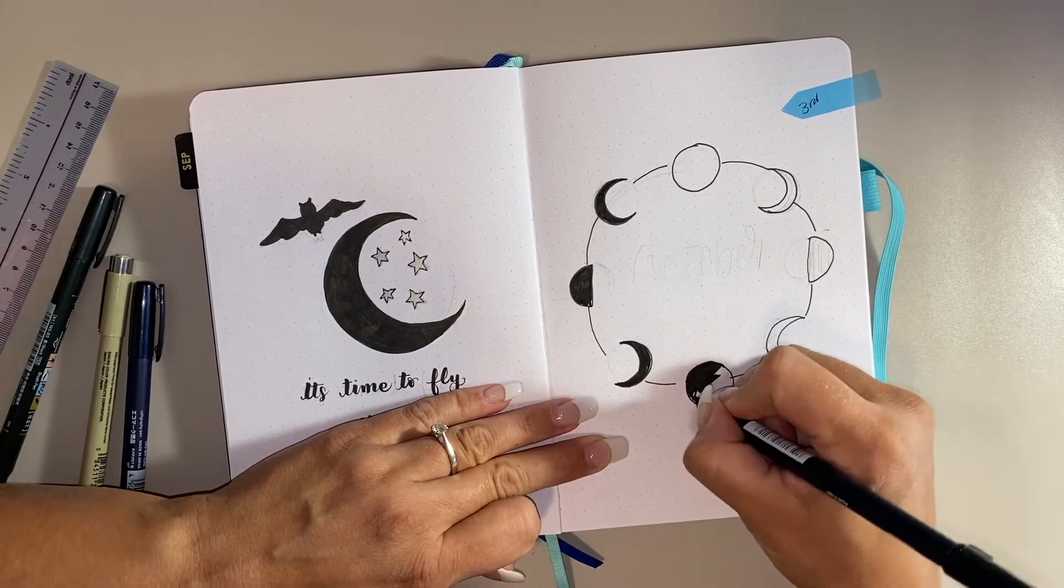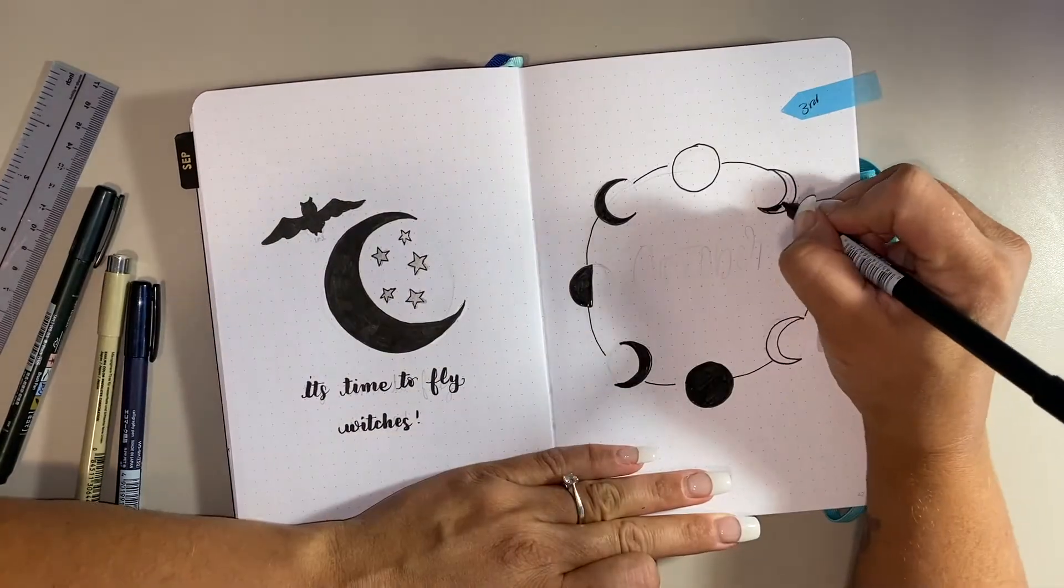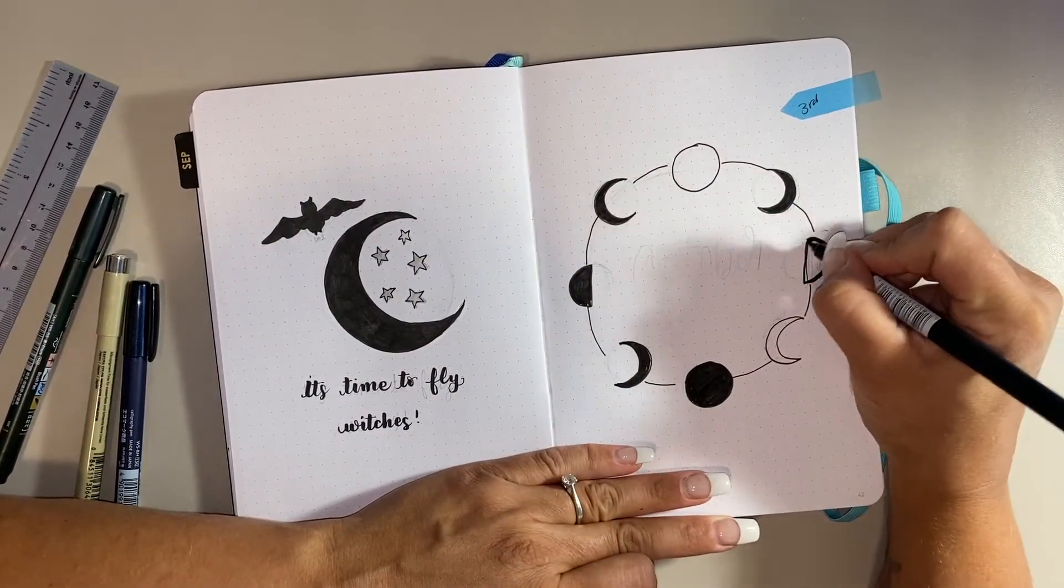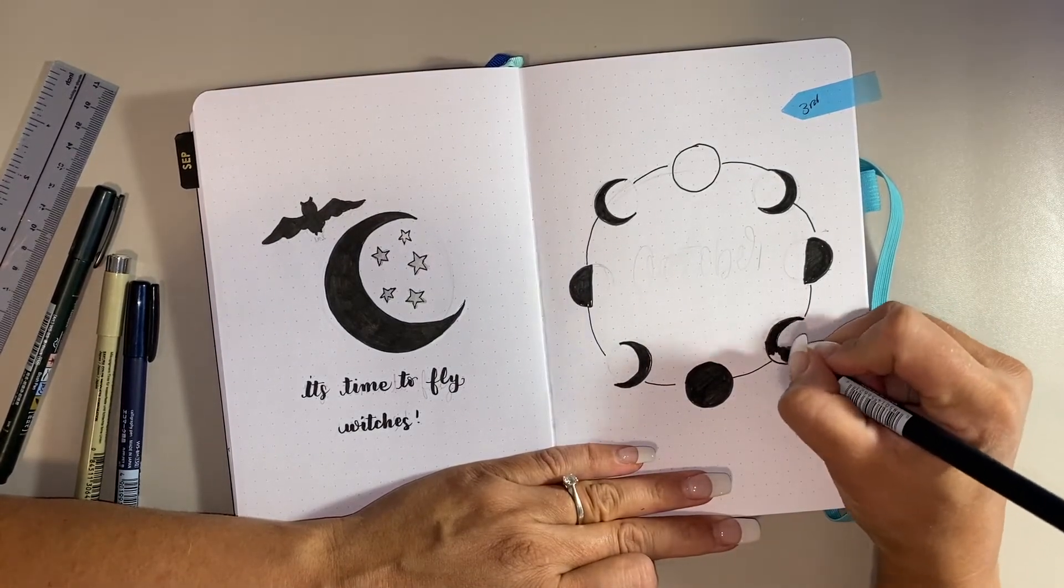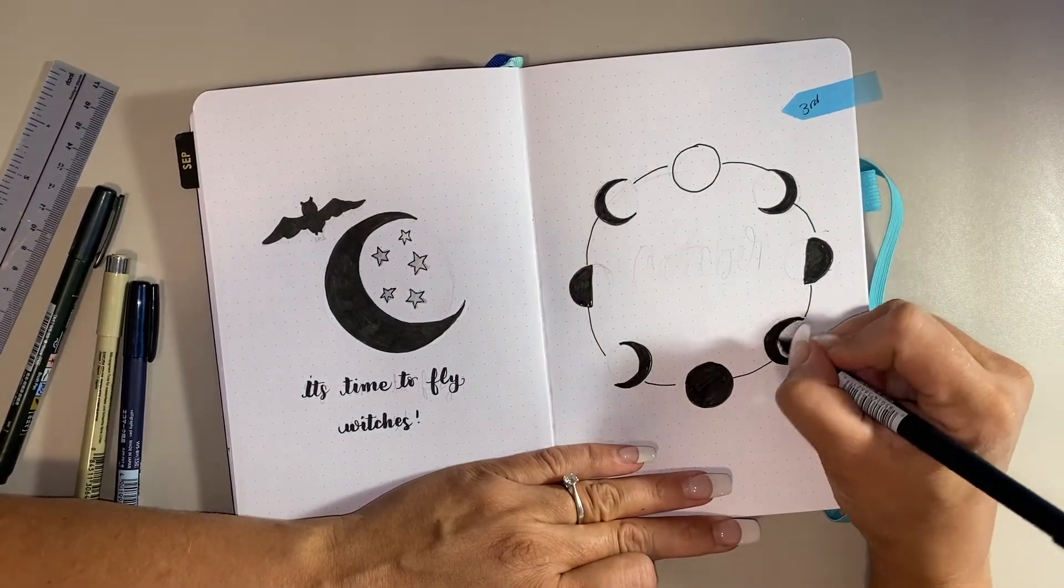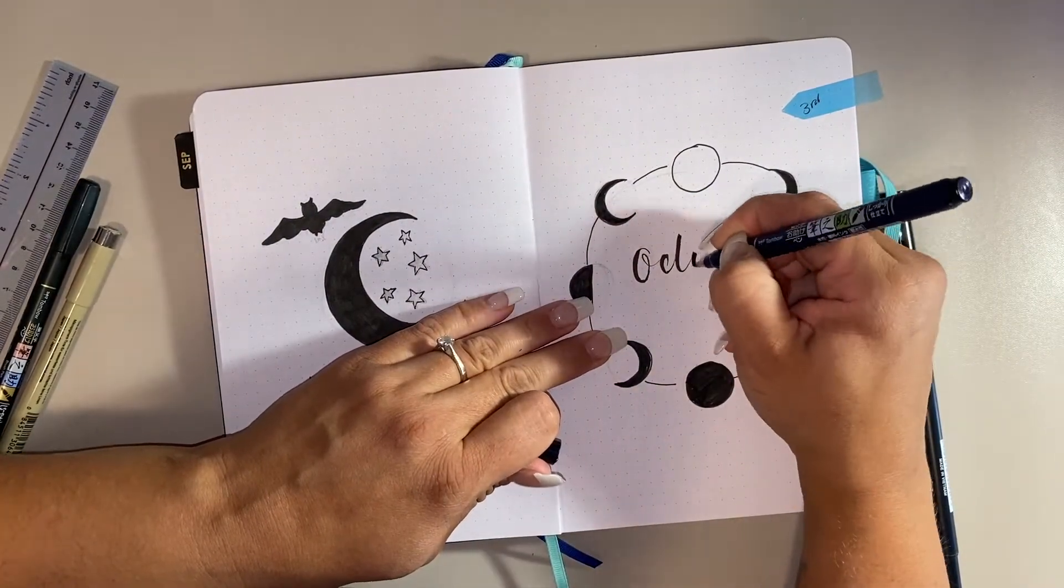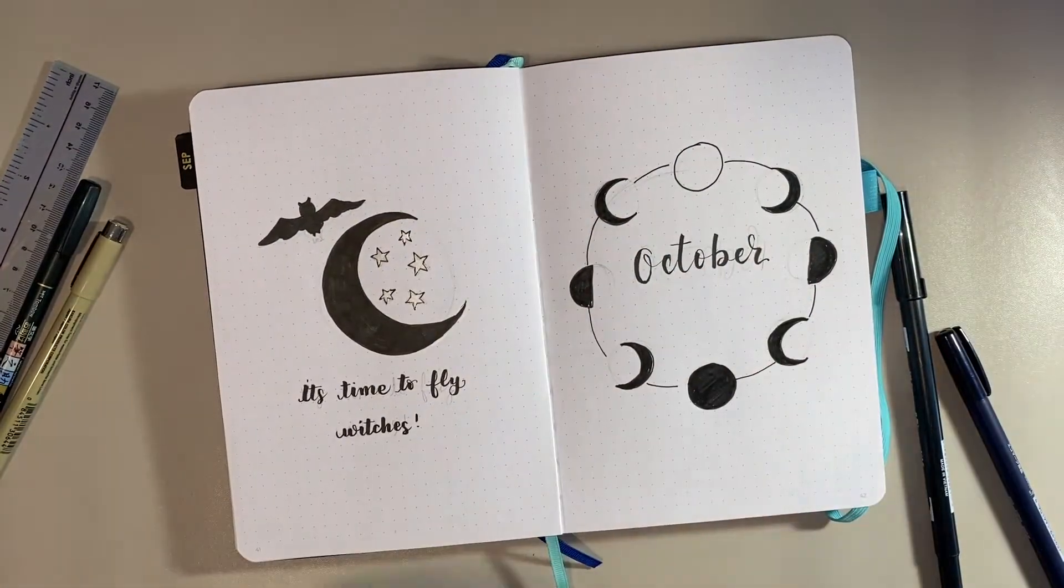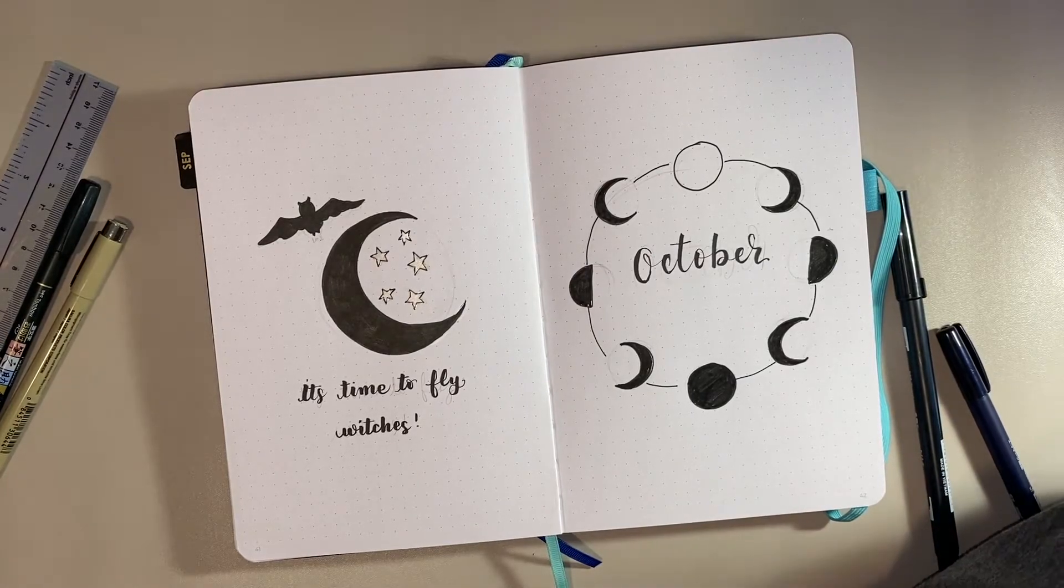You'll see that it kind of stays the same, but I write October in black in the middle, and here you'll see I'm just coloring in each of the moons. As usual, I will leave all of the supplies I have used in this video down below, so go down there, be sure to check them out. If you are interested in purchasing, you can use my link, it is an affiliate link through Amazon, and you can purchase any of the products at no extra cost to yourself while also giving me a hand as well.